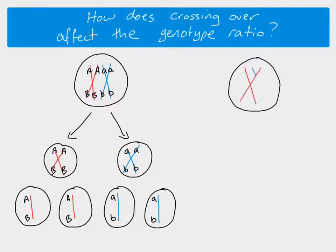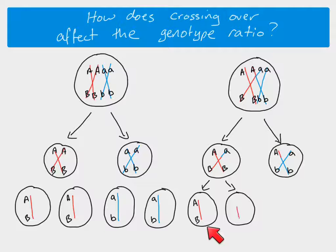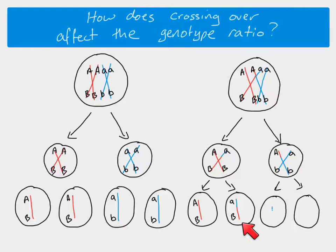If crossing over occurs, we would end up with new combinations because this part here ends up swapping over — these parts of the non-sister chromatids. So we end up with our gene loci being unlinked. As a result, what we end up with in our gametes when crossing over has taken place is new allele combinations. The chromosomes formed as a result of crossing over are called recombinant chromosomes — recombinant because the genetic material has recombined.